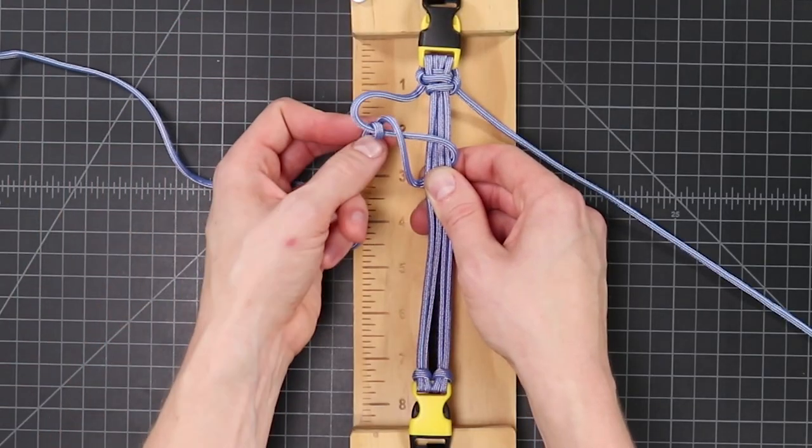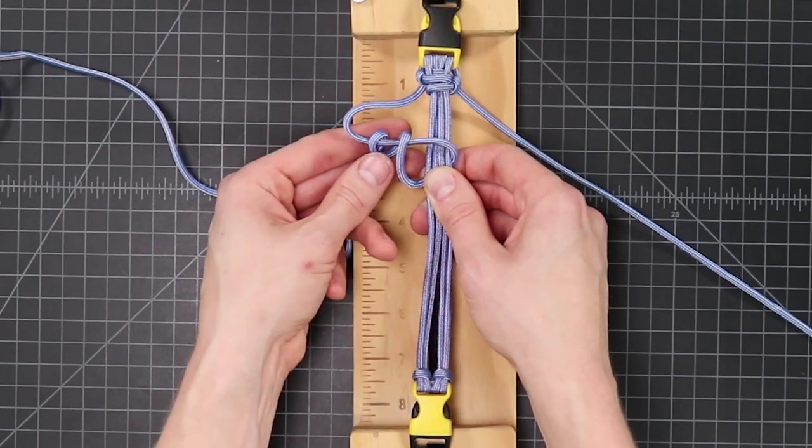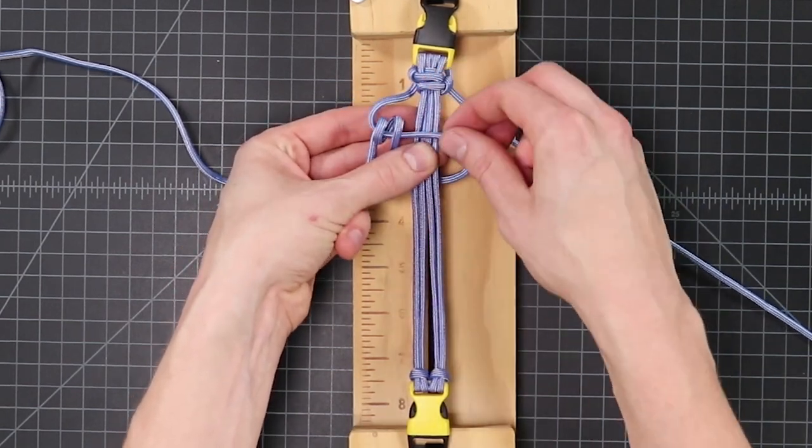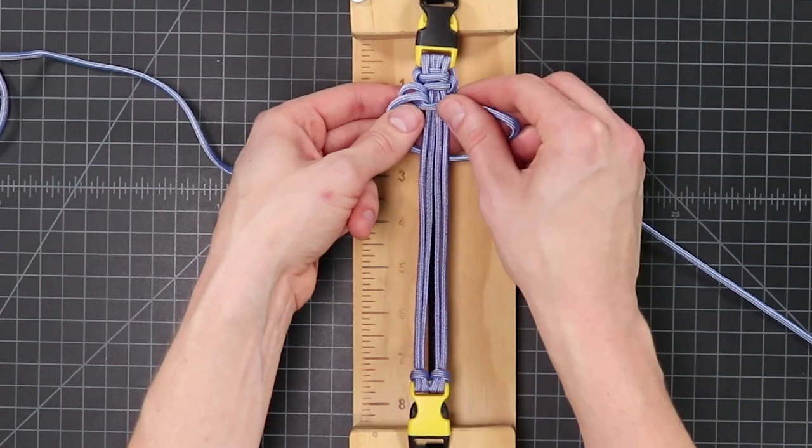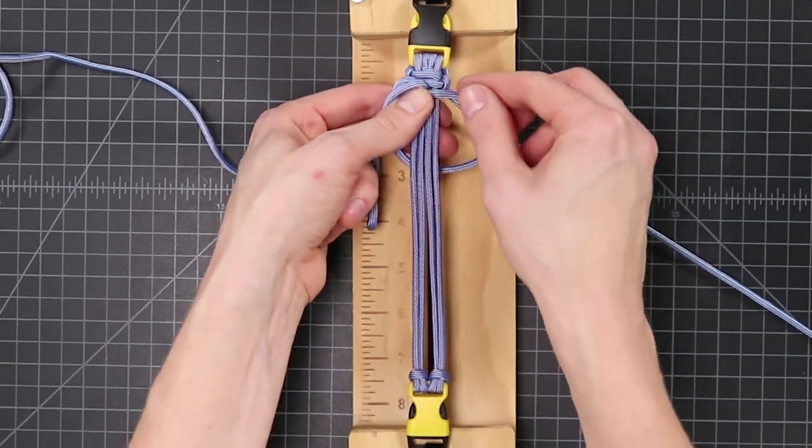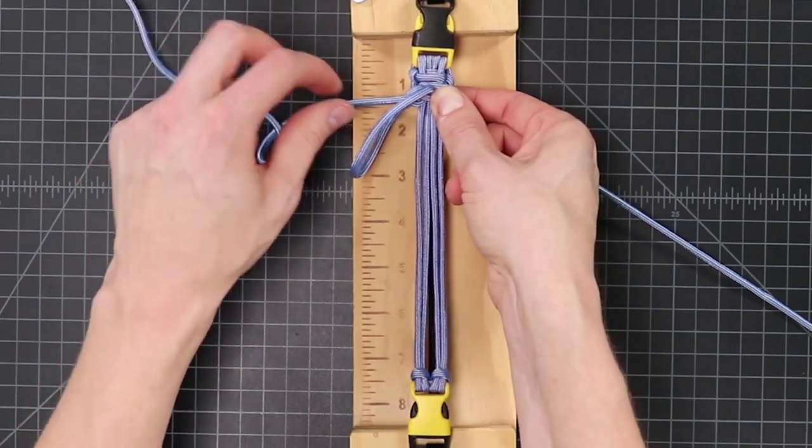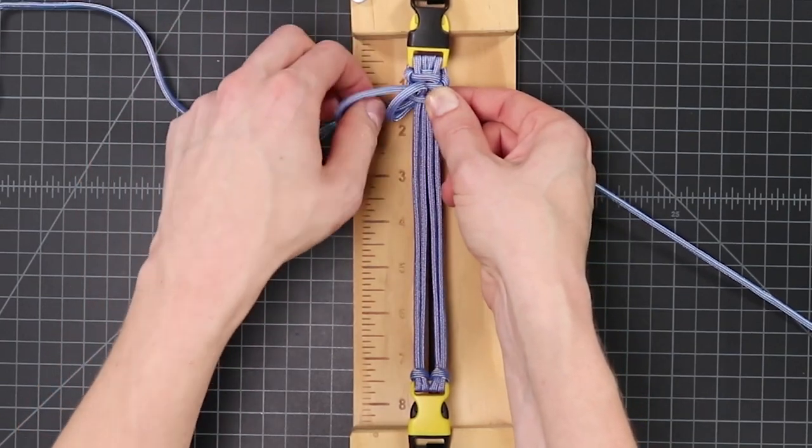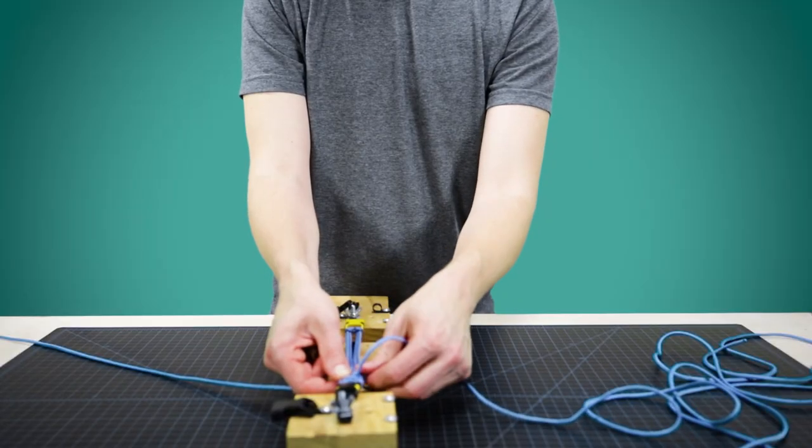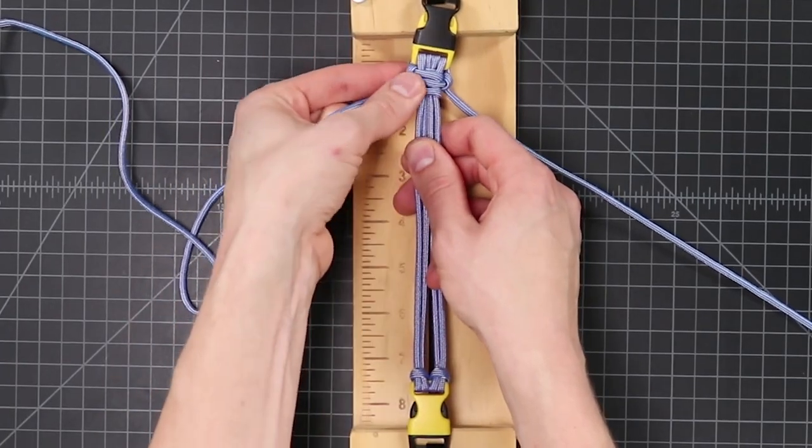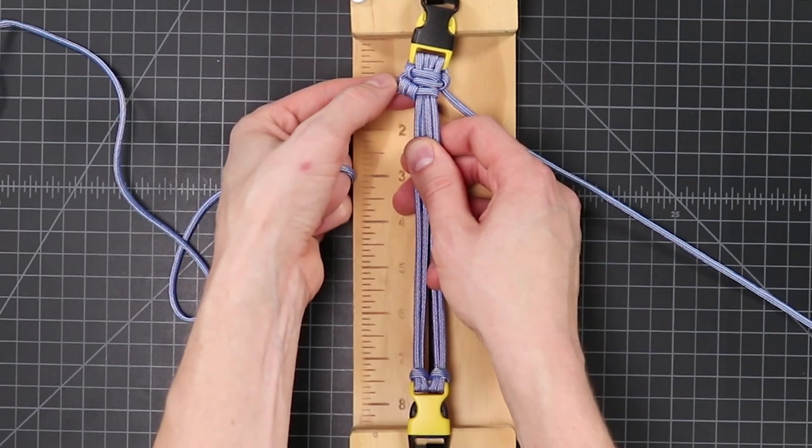Then it should look like this before you tighten it down. Twice around that loop. I find it works best to tighten our main loop first. And then wrap it around, and hold it with your thumb right there. And then you can tighten each loop individually. And to get that even tighter, you can kind of roll these two bumps here in your fingers.